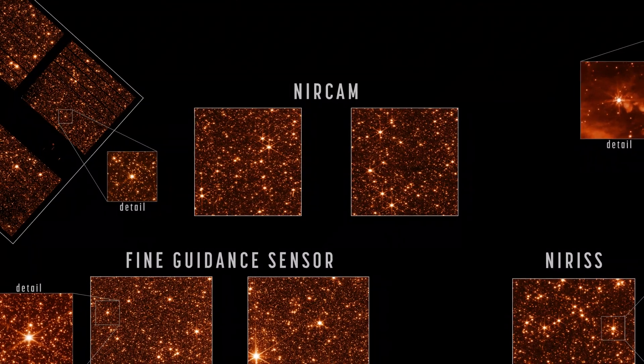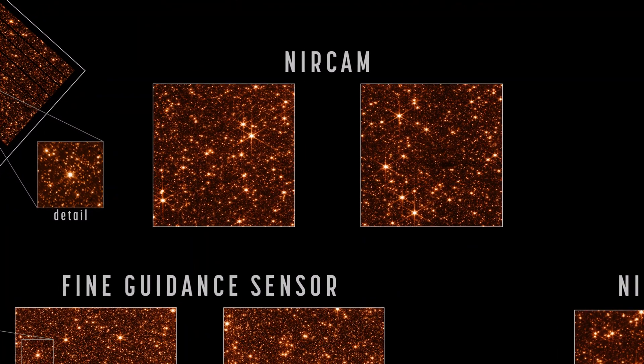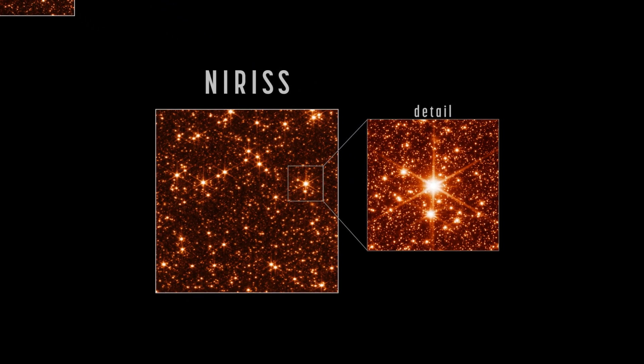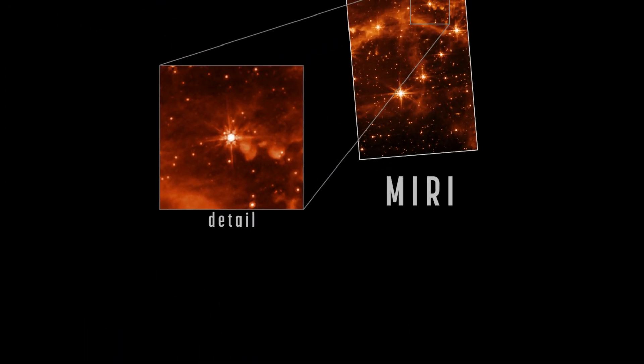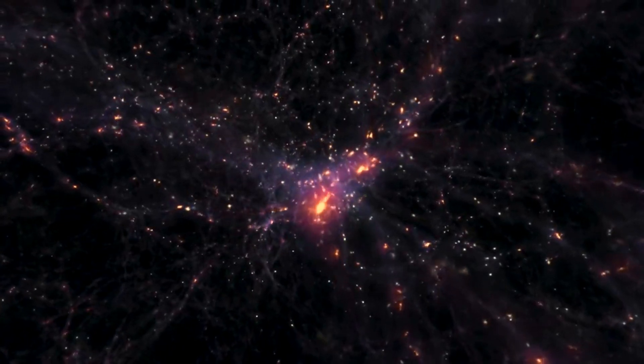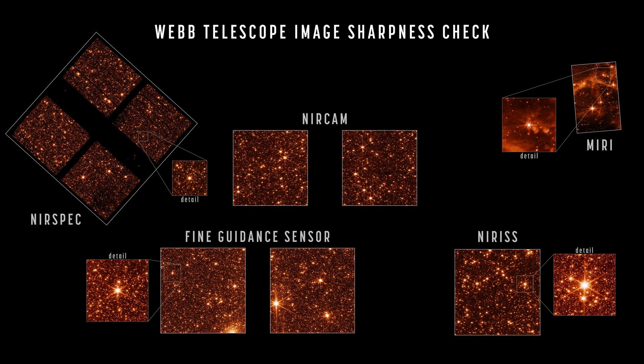Webb's three imaging instruments are NIRCam, images shown here at a wavelength of 2 microns, NIRCam, image shown here at 1.5 microns, and MIRI, shown at 7.7 microns, a longer wavelength revealing emission from interstellar clouds as well as starlight. NIRSpec is a spectrograph, rather than imager, but can take images, such as the 1.1 micron image shown here, for calibrations and target acquisition.